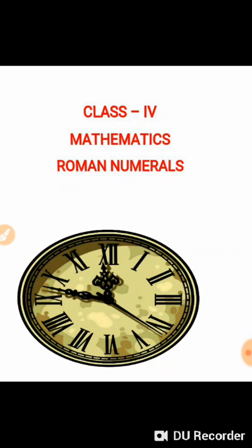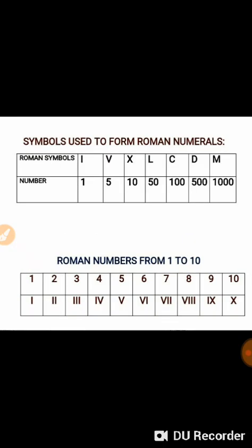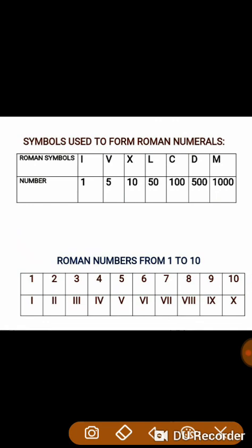These are called Roman numerals. Ancient Romans wrote numerals that did not use place value. They had seven basic symbols. Look at this chart — you can observe the basic symbols used to form Roman numerals.